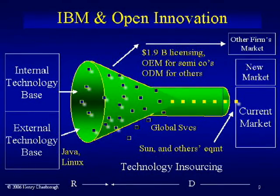A second example, also in the computer industry, would be IBM. Like Intel, IBM has a strong, extensive internal program of R&D, but they leverage and extend that by partnering with open-source software projects — for example, think of Linux or Java — and then building complementary goods on top of that, and wrapping around that their IBM Global Services offering that installs all of that on the customer's premises to the customer's requirements. IBM also does a lot to let their unused ideas go to the outside. They have a very active outbound licensing program and work with other companies to allow them to use IBM facilities to make semiconductor chips.